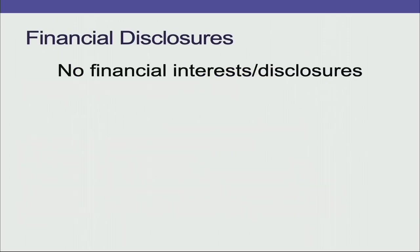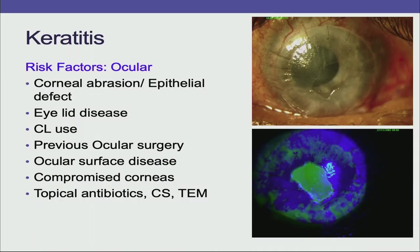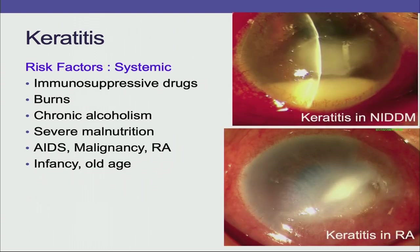I have no financial interests or disclosures. This is a classical case of pseudomonas bacterial keratitis. The risk factors for bacterial keratitis can be ocular or systemic. Ocular risk factors include corneal abrasion or epithelial defect, eyelid disease, contact lens use, previous ocular surgery, ocular surface disease, compromised corneas, and injudicious use of topical antibiotics, steroids, and traditional eye medicine.